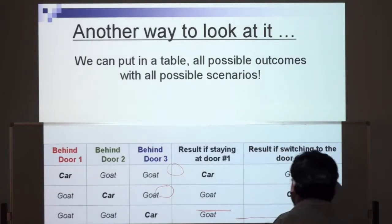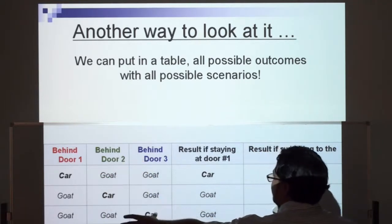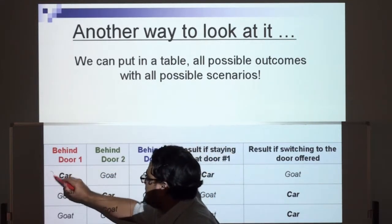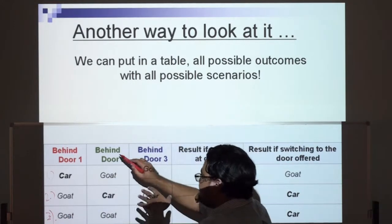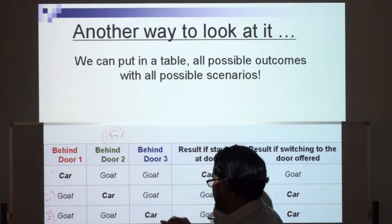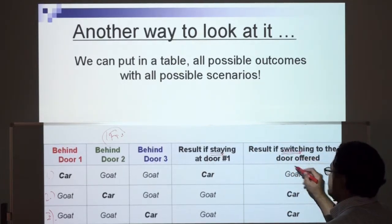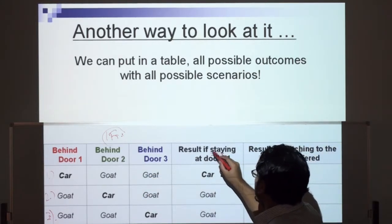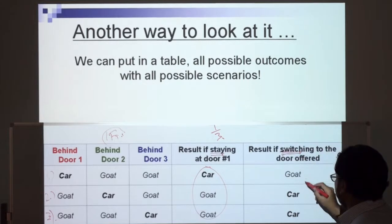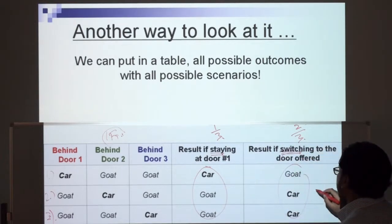For some people it's easier to look at it this way. I've put all the possibilities in one table. Scenario one: if the car was behind the red door; scenario two: if the car was behind the green door; scenario three: if it was behind the blue door. This shows the result if you stay with the same door or if you switch doors. If the car is behind red and you stay, the chance of a car is one of three. But if you switch — two cars, one goat — you have a better chance. If you change or switch your door, you have a better chance of getting a car.